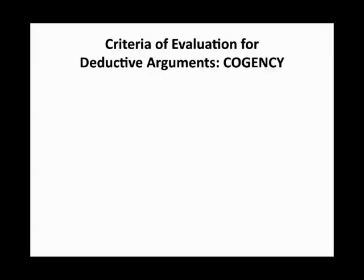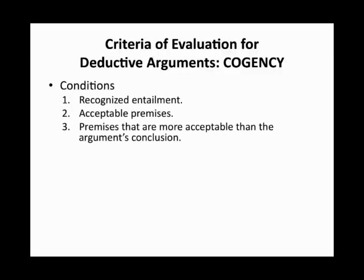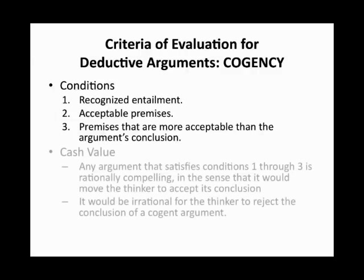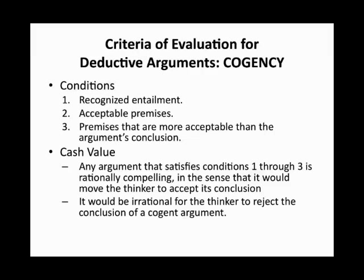Finally, we arrive at argumentative cogency, and there are three conditions that must be met for an argument to be considered cogent. Number one, recognized entailment. Number two, acceptable premises. And number three, premises that are more clearly acceptable than the argument's conclusion. Any argument that satisfies these three conditions is rationally compelling, in the sense that it would move the thinker to accept its conclusion. It would also be irrational for the thinker to reject the conclusion of a cogent argument. This segment concludes Learning Module 3.